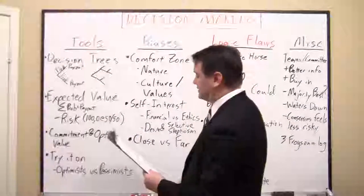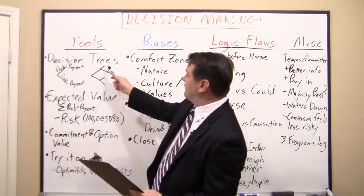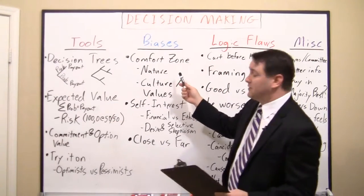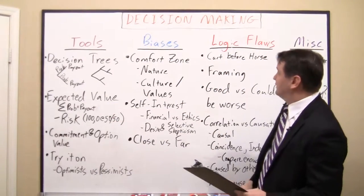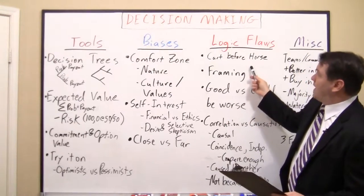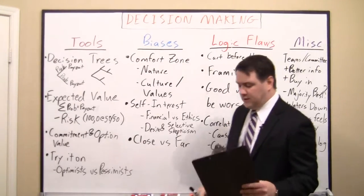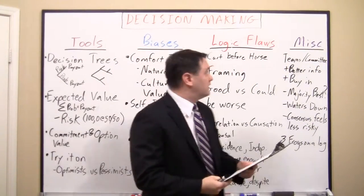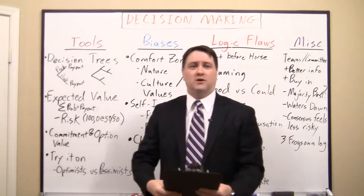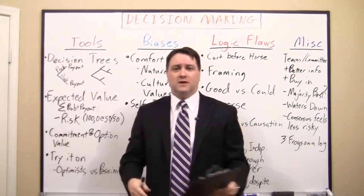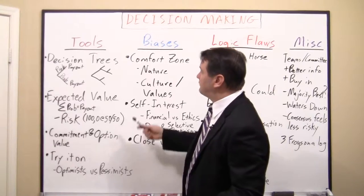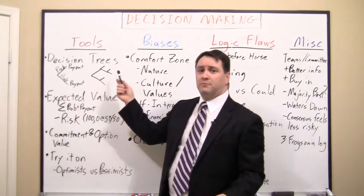So I want to go through just a variety all at once of decision making as an entire group. To do that I have several samples here. I want to talk about some of the tools we'll use, some of the biases that influence our decision making, some of the traps, some of the logical flaws that we can confront, and last I have some miscellaneous thoughts to illustrate some of the broader perspectives. So without further ado, let's jump right into it.